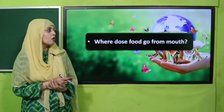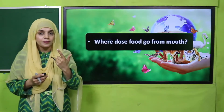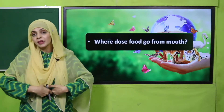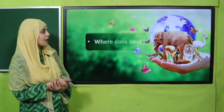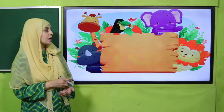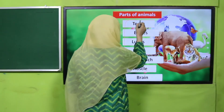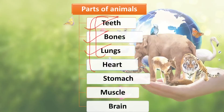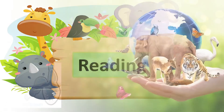A pre-reading question: where does food go from the mouth? You put food in your mouth and it goes into your tummy, but there is something inside your tummy we will discuss about. Now let's look at the parts of animals: teeth, bones, lungs, and heart — we have already studied these. Today we are going to discuss heart and stomach, as well as brain and muscles.